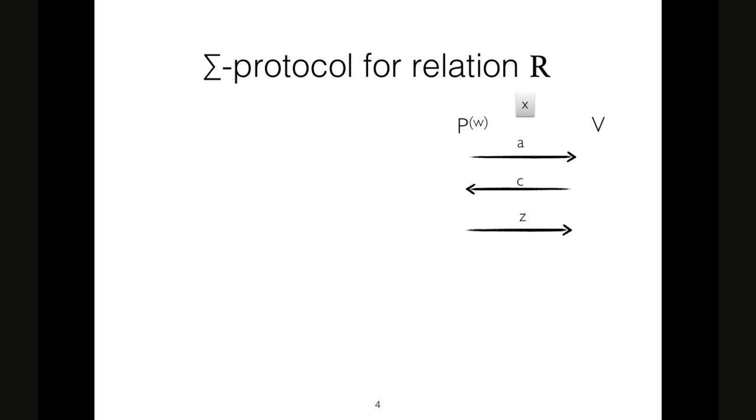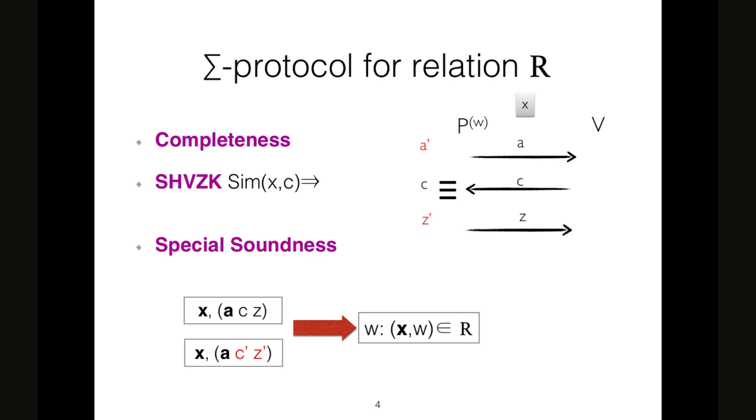But what is a sigma protocol for a relation R? It is a three round public coin protocol that enjoys completeness - if the prover and verifier follow the protocol, then verifier always accepts. Special honest verifier zero knowledge - there exists an efficient simulator that takes as input theorem X and challenge C, and outputs a transcript that is identically distributed to the real transcript. And special soundness - there exists an efficient algorithm that takes as input two accepting transcripts with respect to the same theorem X that share the first round and outputs a witness for the theorem X.